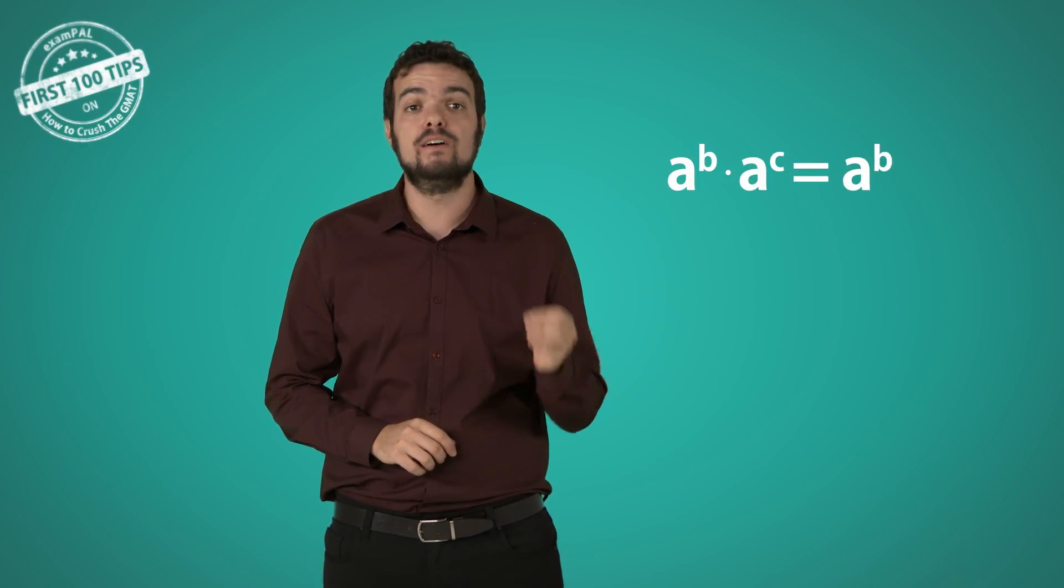A to the power of b times a to the power of c becomes a to the power of b plus c. See that? Multiplication replaced by addition. In the same way, division becomes subtraction. And also in the same way, a power of power becomes multiplication. x to the power of y all to the power of z becomes x to the power of y times z.